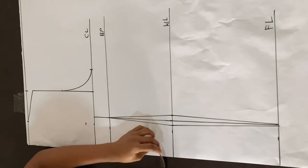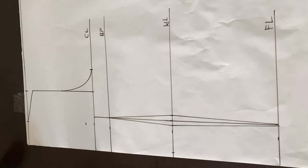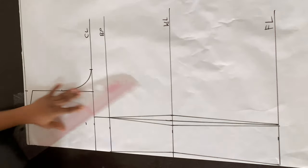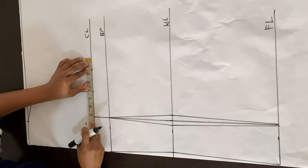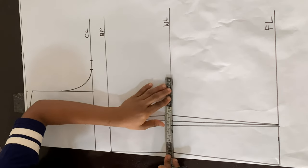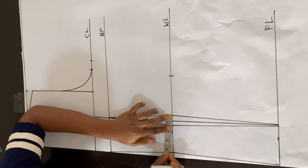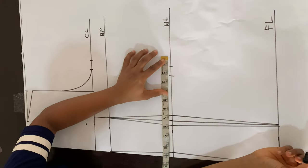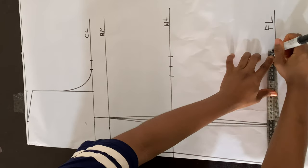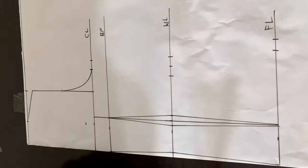At the waistline I'm going in by half an inch so there's no folding at the back, connecting up to the bust point and down to the full length line. I'm adding one inch allowance at the chest line. At the waistline I'm dividing the waist measurement by four, marking that, and adding that allowance plus an extra one inch for sewing. At the full length line I'm dividing the hip circumference by four, marking it, adding one inch allowance, then connecting all those lines together.